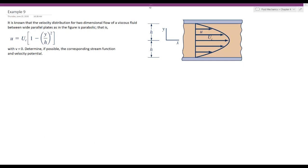So determine, if possible, the stream function and the velocity potential. As you can see here, we have two parallel plates, and the velocity profile u at the center, the velocity is maximum and is equal to uc.